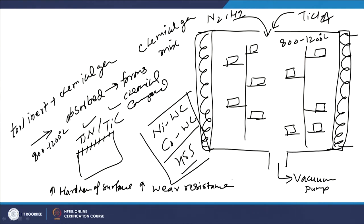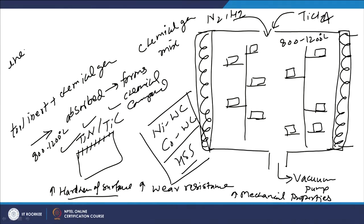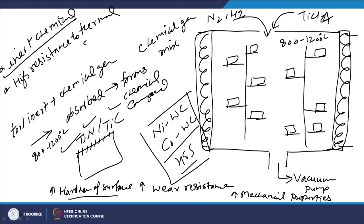When these kinds of films are formed on other components, it also helps in increasing the mechanical properties, especially the tensile strength and the fatigue resistance. Once such films are formed, not only are they of very high hardness, but they are also inert in chemical environments and they offer very high resistance to thermal softening.